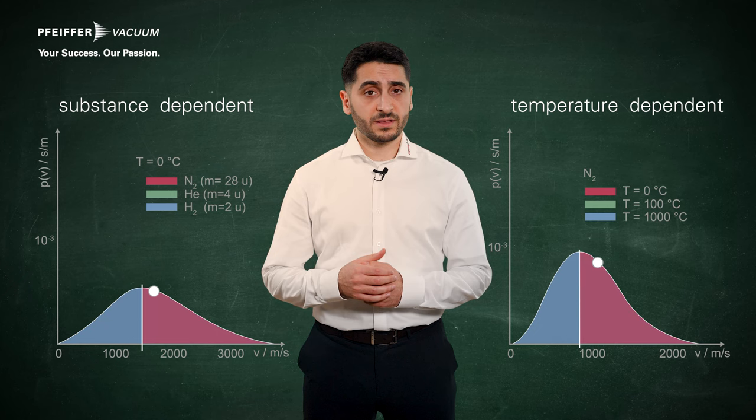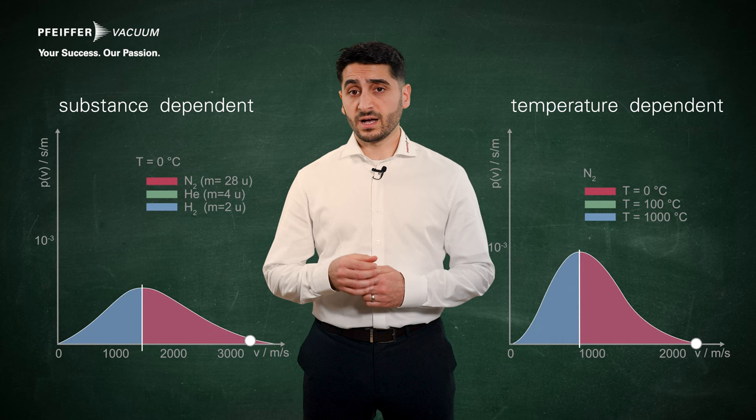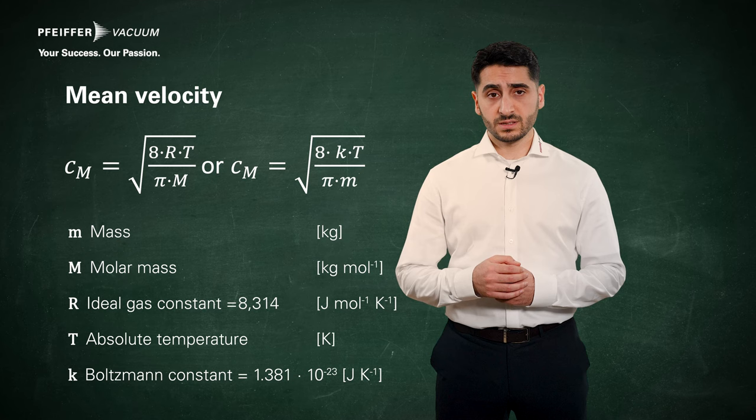As it can be seen, the curves are asymmetrical and gradually become flatter in x-direction after their maximum. Therefore the mean velocity has a higher value than the most probable velocity.